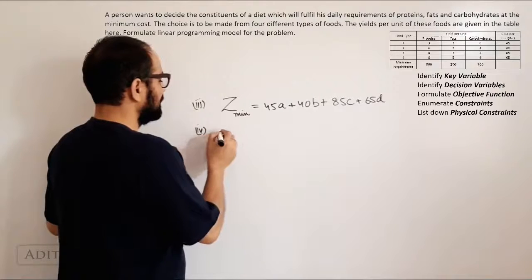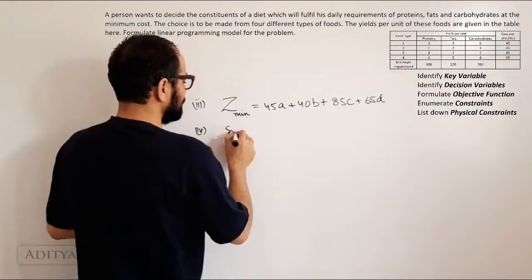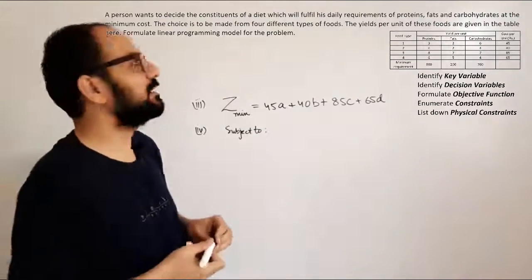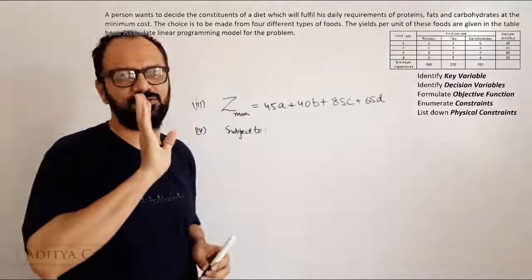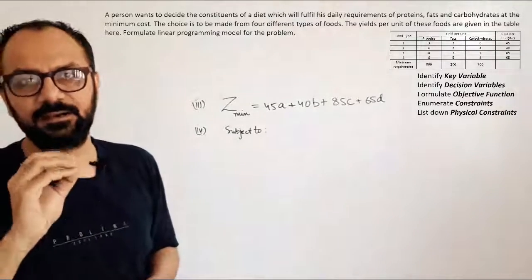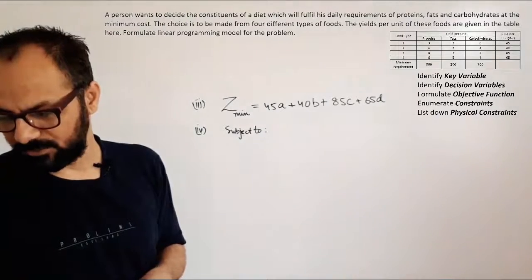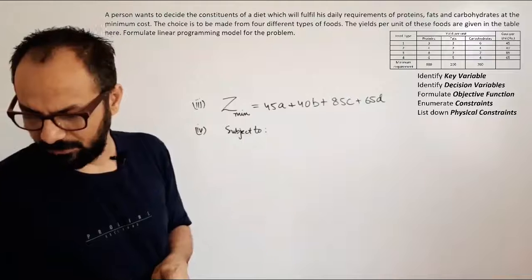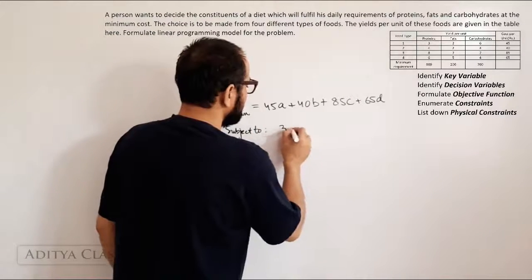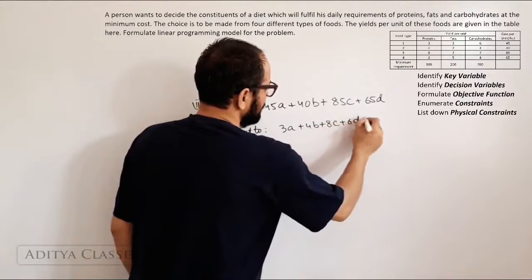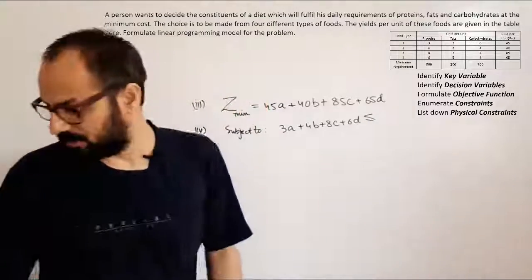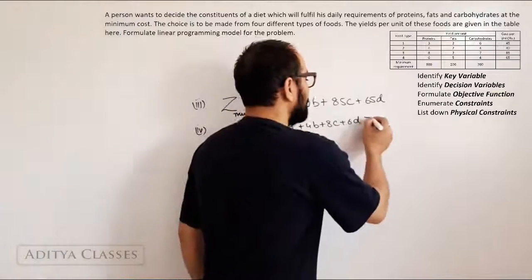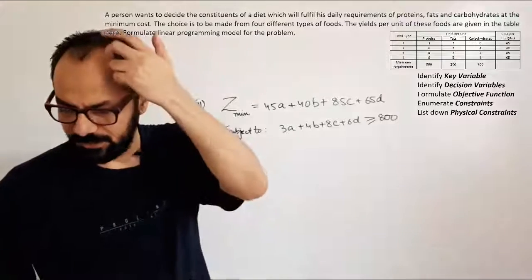Next, what is our next step? We list down the constraints. Minimize Z subject to certain constraints. What are those constraints? You will be consuming proteins from food type one, two, three and four. Now whatever amount of proteins you wish to consume, you may consume. But there should be at least 800 units consumed. You cannot consume less than 800. So how many units will we be consuming? I am consuming food type one, A units, food type two, B units and so on. So, total would be 3A plus 4B plus 8C plus 6D should be, sorry, this time we have to consume at least, so this should be more than or equal to 800 units.